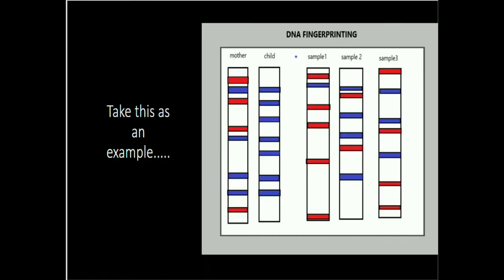To understand how VNTRs help in DNA fingerprinting, consider this example. Here we have the VNTR sequence or DNA fingerprint of a mother and a child, and three samples from which we must find out who is the father of the child. First, let's look at which VNTRs of the child match with the mother.